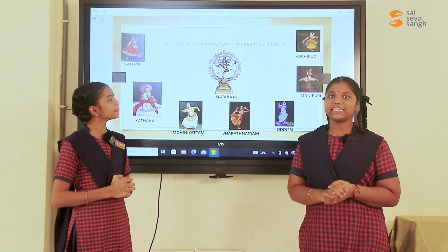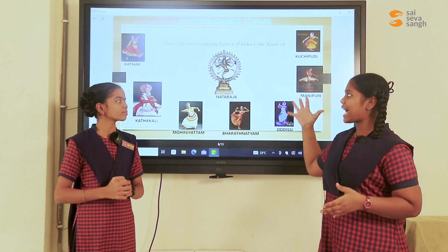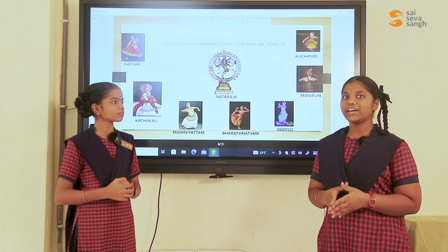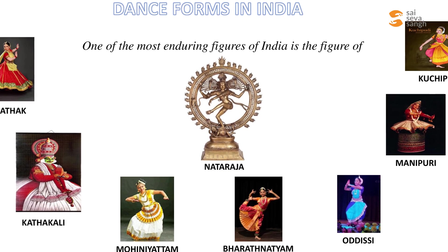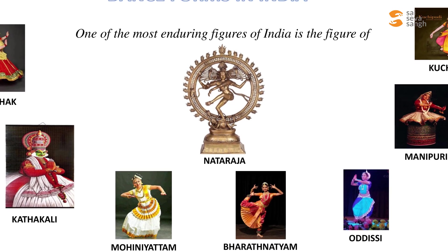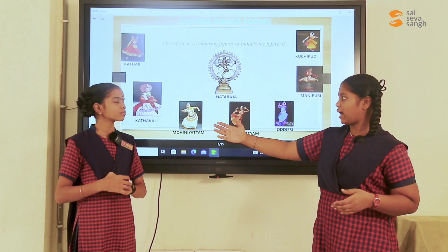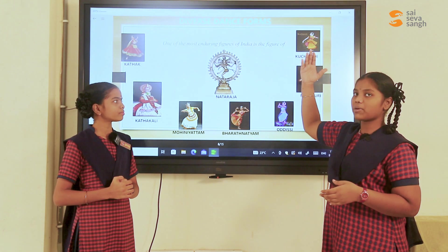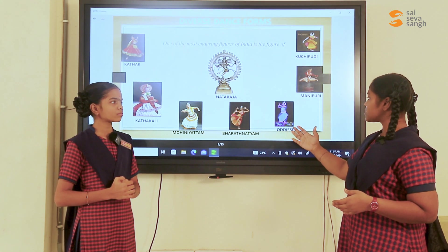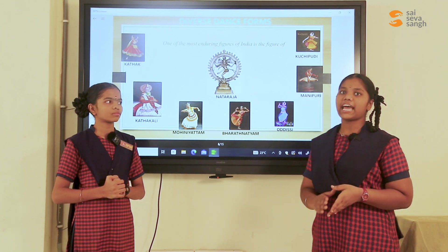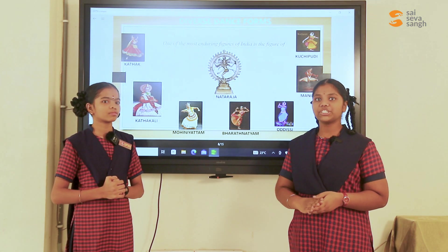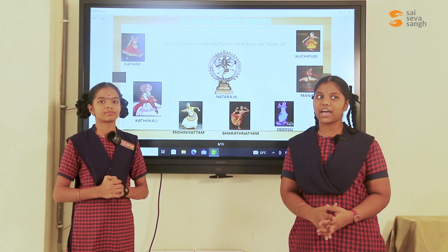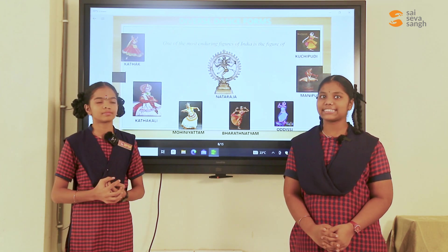Dance forms in India. We have diverse dance forms in India, and each state has its own. For example, Kathak dance from Uttar Pradesh, Kathakali and Mohiniyattam dance from Kerala, Bharatanatyam dance from Tamil Nadu, Kuchipudi dance from Madhya Pradesh, Odissi dance from Odisha, and Manipuri dance from Manipur. In addition, we have Bhangra dance in Punjab and Ghoomar dance in Rajasthan.